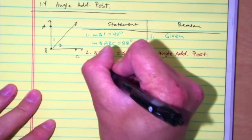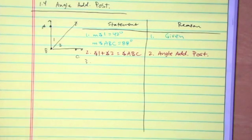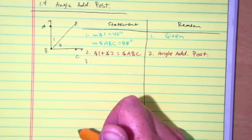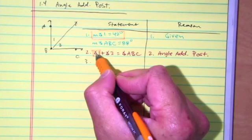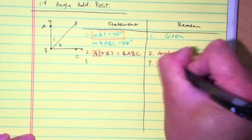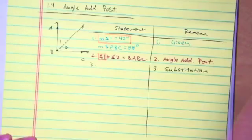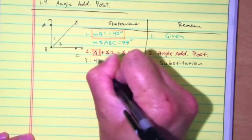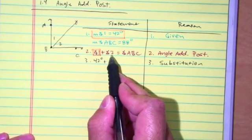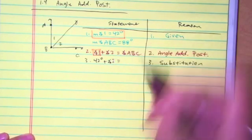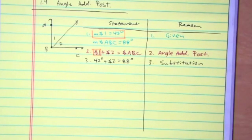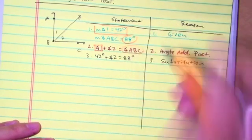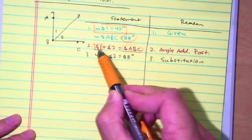The next thing I'm going to do is use my given information. What do you know about angle 1? Angle 1 is 42 degrees. The reason is substitution. So I write 42 degrees plus angle 2 equals 88 degrees. Notice how I highlighted that substitution in a different color — put a circle around it. That helps me visualize I need to substitute this information every time I see angle 1.